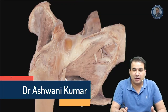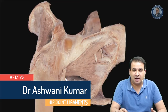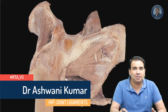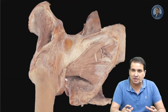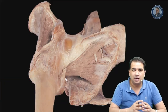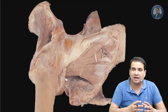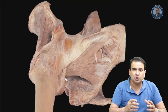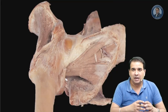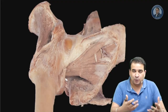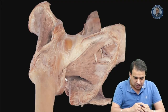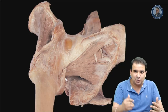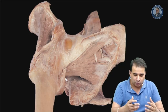Hello everyone, welcome back to hashtag RTA_VS, the real-time anatomy video series. In this section today we'll be talking about some important ligaments which are capsulating the hip joint - their attachments, functions, and important muscles surrounding the hip joint ligaments.